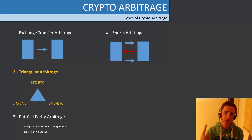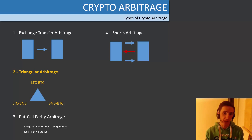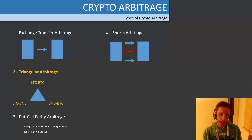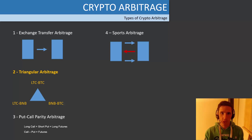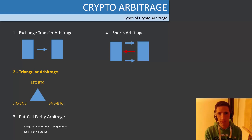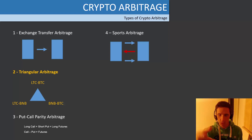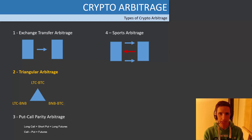Arbitrage number two is triangular arbitrage. Triangular arbitrage is when you're just on one exchange — it doesn't have to be one exchange but it can be — and what you're looking to do is buy a coin, sell it for a different coin, and buy back the original coin all on one exchange, taking advantage of mispricing in the order book. If none of that made sense, don't worry because I'm going to bring it right back down to very broad basics and build you back up from there.